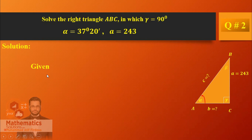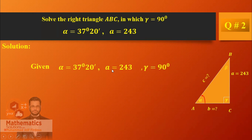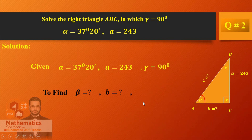The given information is: alpha is 37 degrees 20 minutes, one side A which is 243, and one angle gamma. So this is two angles and one side given. What do we need to find? The angle beta is missing. Side A is given, so sides B and C need to be found.